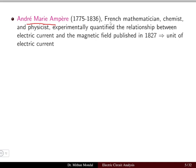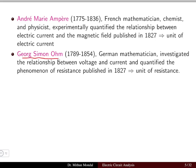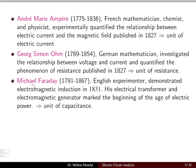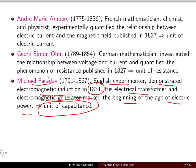André-Marie Ampère, a French mathematician, chemist, and physicist, experimentally quantified the relationship between electric current and magnetic field, publishing in 1827 — the unit of current, the Ampere, is named after him. George Simon Ohm, a German mathematician, investigated the relationship between voltage and current and quantified resistance, also publishing in 1827 — the unit of resistance, the Ohm, carries his name. Michael Faraday, an English experimenter, demonstrated electromagnetic induction in 1831, leading to electrical transformers and generators; the unit of capacitance, the Farad, is named after him.